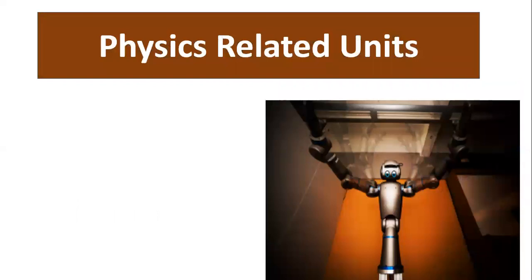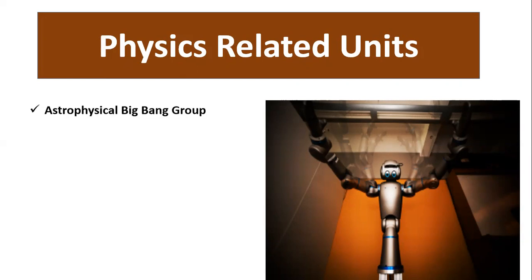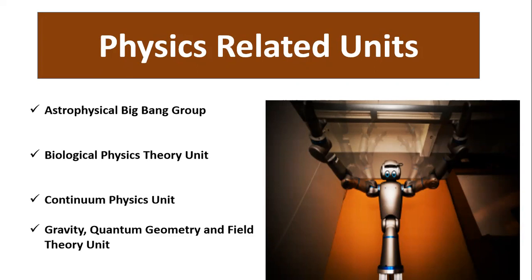The last area is physics-related units. If your field involves physical chemistry, pure physics, quantum physics, or related areas, you can apply to units such as the Astrophysical Big Bang Group, Biological Physical Theory Unit, Quantum Physics Unit, and Gravity, Quantum Geometry and Field. As mentioned, there are many more units beyond these four — searching OIST-related units on Google will show you a large number in each field.